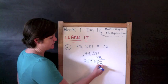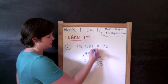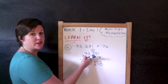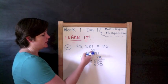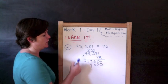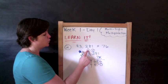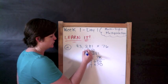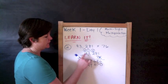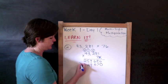Alright. Seven times one is seven. Seven times eight is fifty-six. Five on top of the two, bring my six down. Seven times two is fourteen. Fourteen plus five is nineteen. Carry my one. Seven times three is twenty-one, plus one is twenty-two. Seven times four is twenty-eight, plus two is thirty.